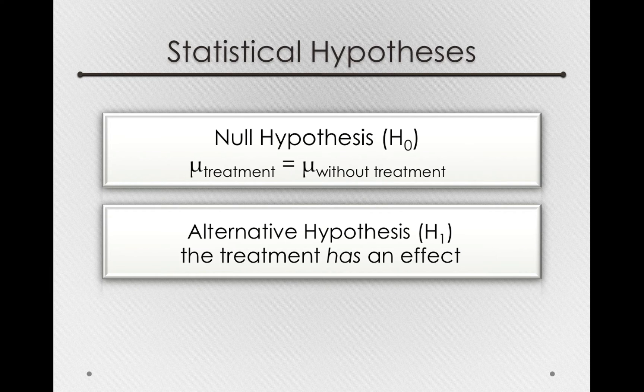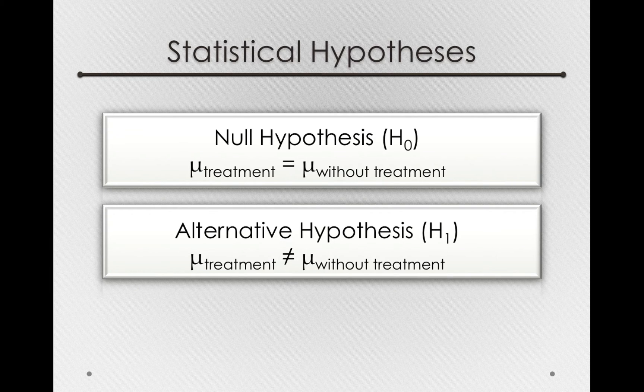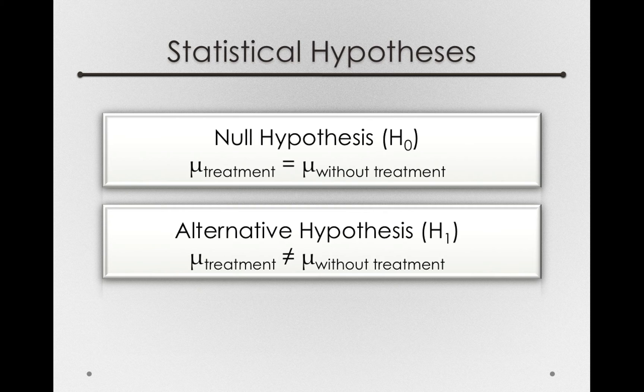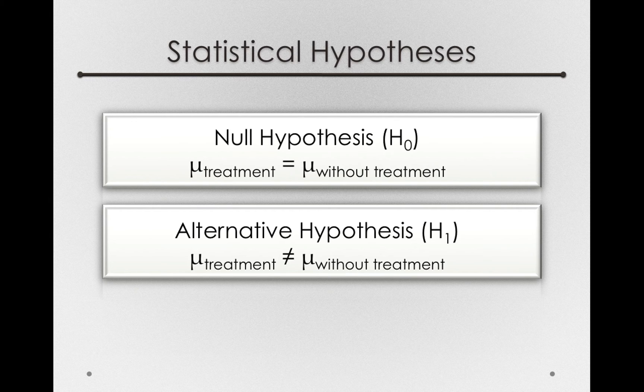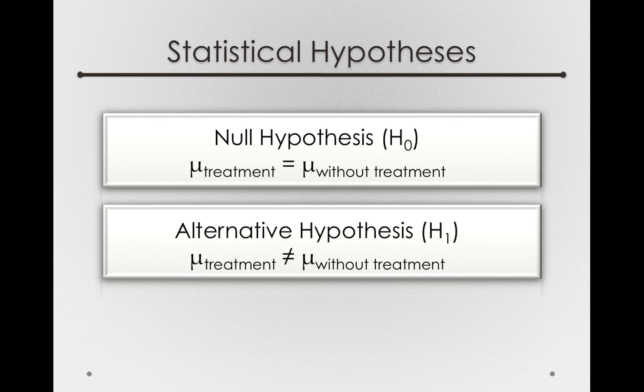Now on the other side, the alternative hypothesis makes a very nonspecific claim, that the mean of a population treated with ginseng is not equal to the mean of a population not treated with ginseng. Now let's pause for a second and observe two important things about our null and alternative hypotheses as we form them right now.